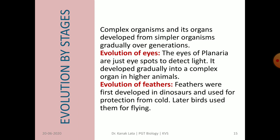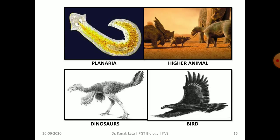The next topic is evolution by stages. Complex organisms and their organs developed from simpler organisms gradually over generations. The first example is the evolution of the eye. In planaria, the eyes are just eye spots to detect light, which gradually developed into a complex organ in higher animals. Next is the evolution of feathers. Feathers were first developed in dinosaurs and used for protection from cold. Later, birds use them for flying. In this figure, you can see the eye spot of planaria, those of higher animals, as well as feathers of dinosaurs and birds.